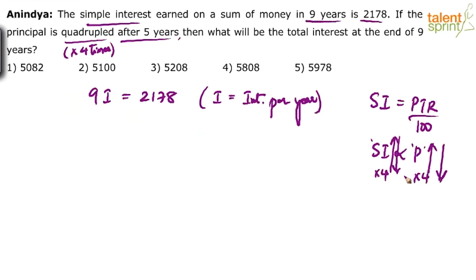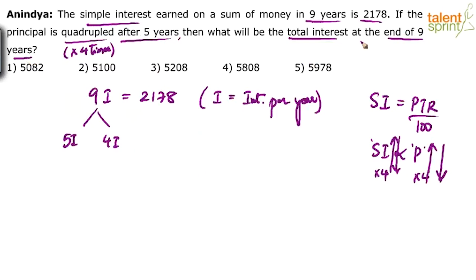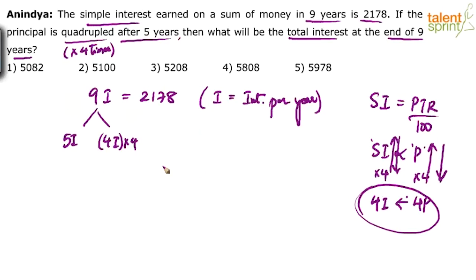If you break 9i as 5i plus 4i — interest for the first five years plus interest for the next four years — then in the other case, if the principal is quadrupled after five years, for the first five years interest remains 5i. But for the remaining four years the principal was quadrupled, and if the principal is quadrupled, the interest also gets quadrupled. So 4i becomes 4 times 4i, which is 16i.